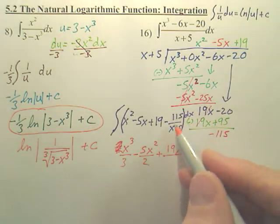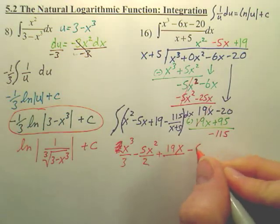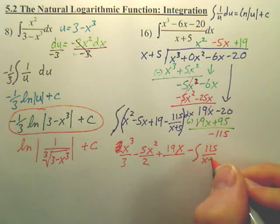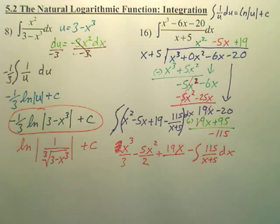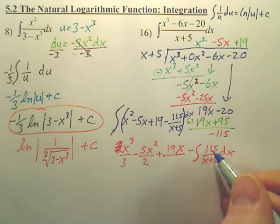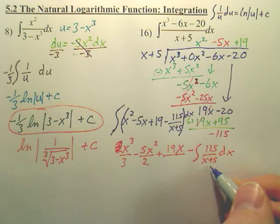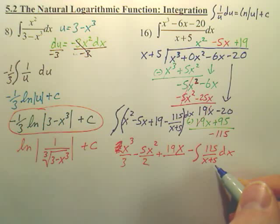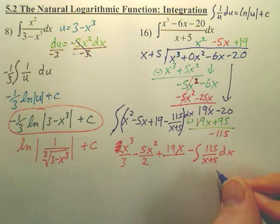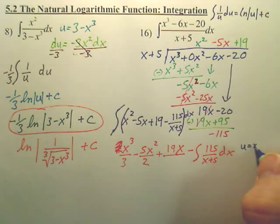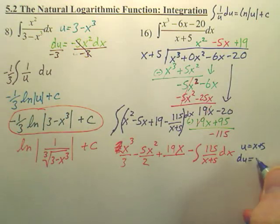And then this last one, I'm just going to do this for a second because this one might take a little bit more thinking. For this last piece, I could pull out the 115 out, and then I have 1 over this, correct? Wouldn't u be x plus 5? And when you derive that, does it change anything? If I make u equals x plus 5, what's du going to be? Isn't it just dx?